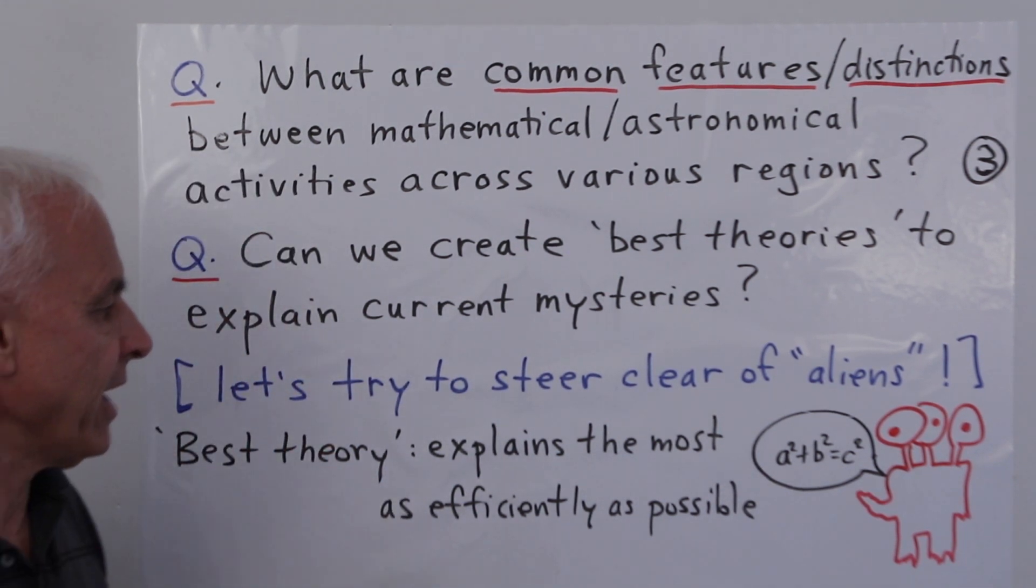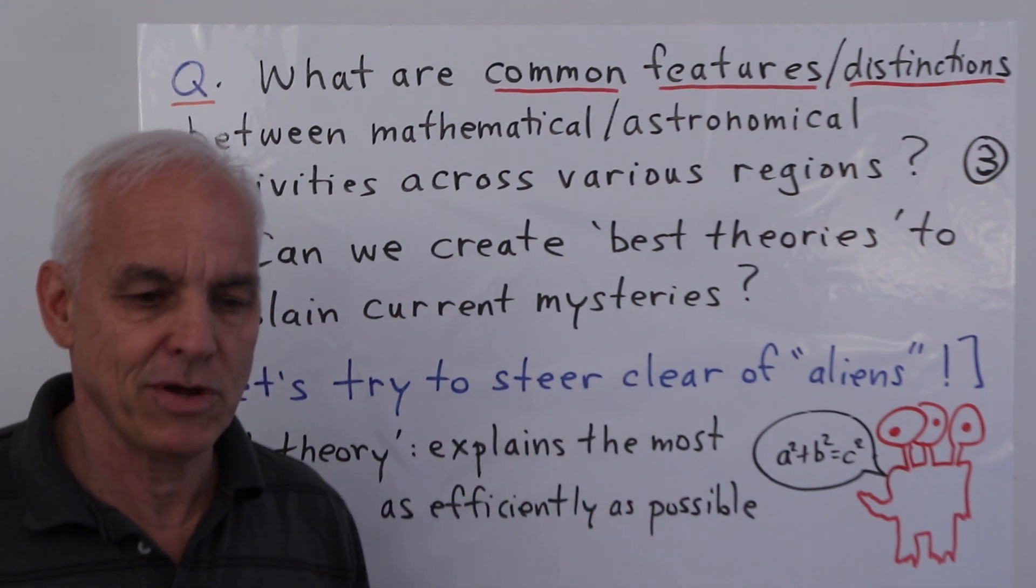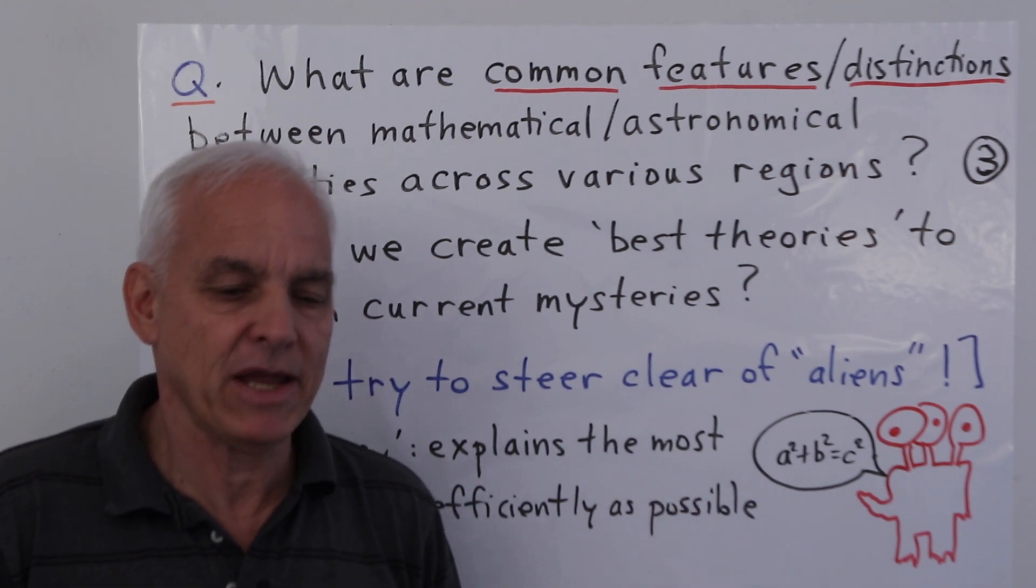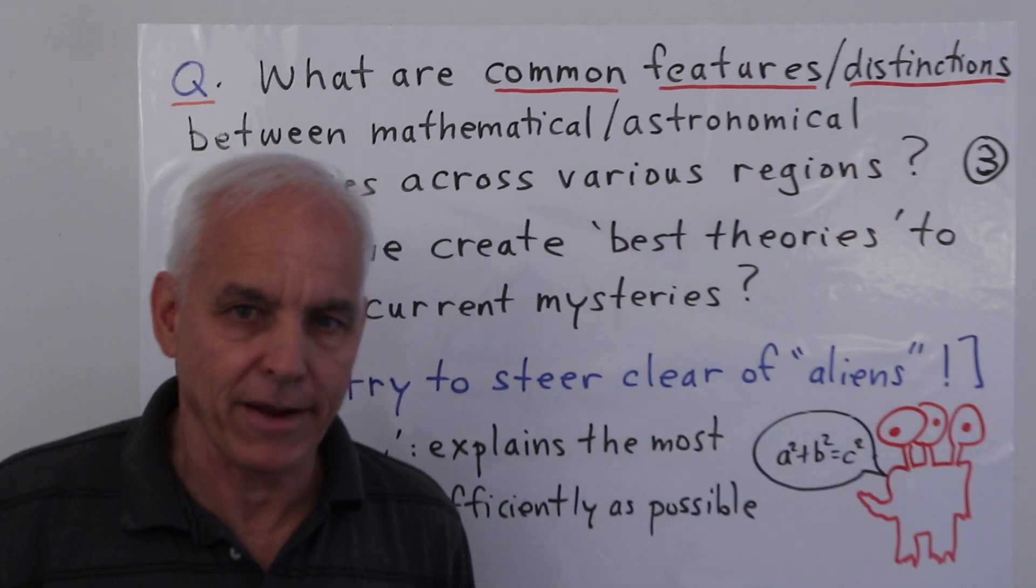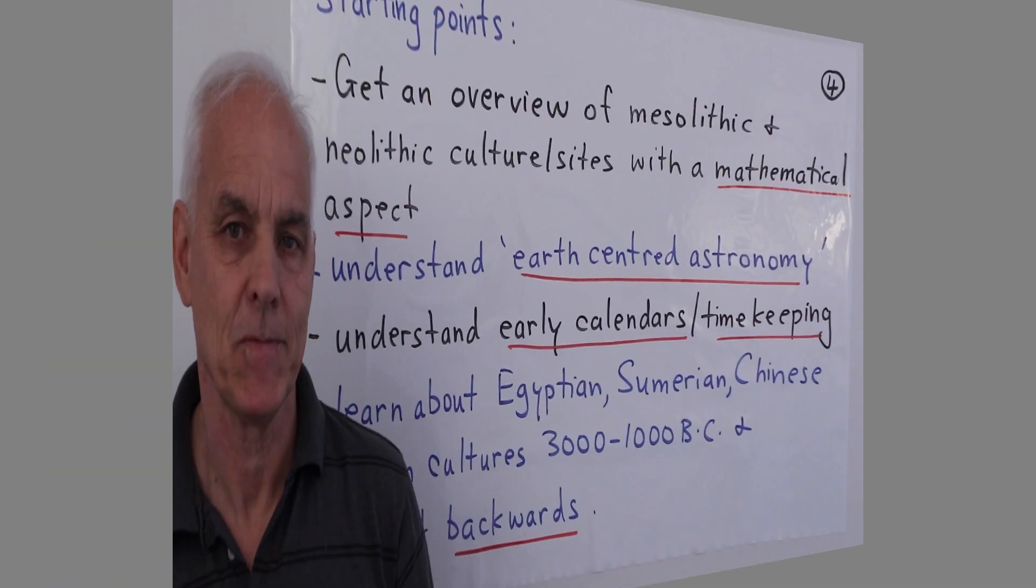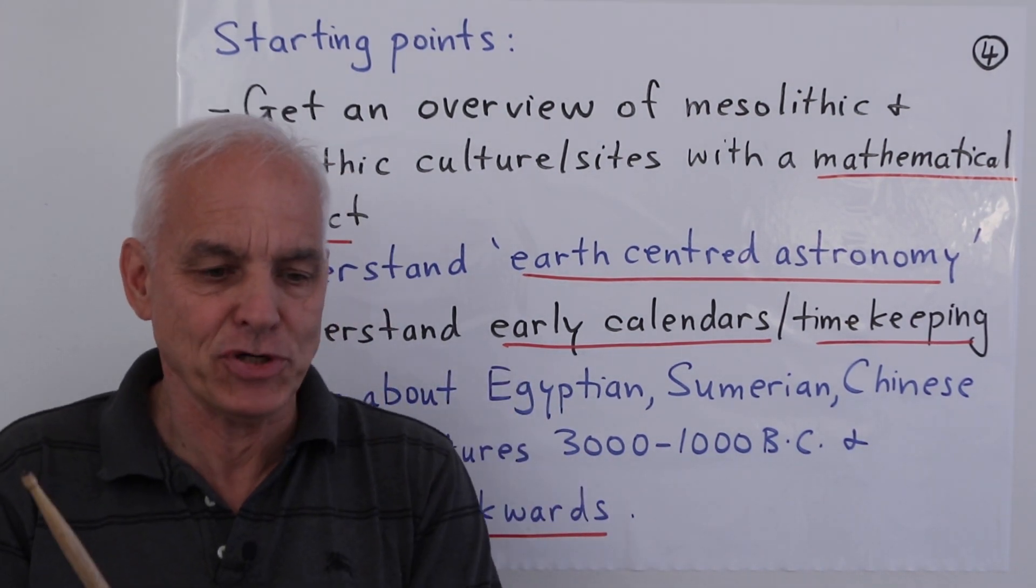By best theory: it explains the most as efficiently as possible. We want theories that are reasonably powerful, they explain stuff, but they don't do so in an elaborate, meandering, artificial kind of way.